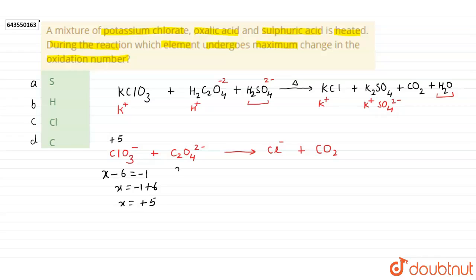And in oxalate ion, for carbon we write 2X minus 8 for 4 oxygen atoms and minus 2 is the net charge. 2X is equal to minus 2 plus 8, we get 2X is equal to plus 6 and X is equal to plus 3. Here we have plus 3 oxidation state for carbon.